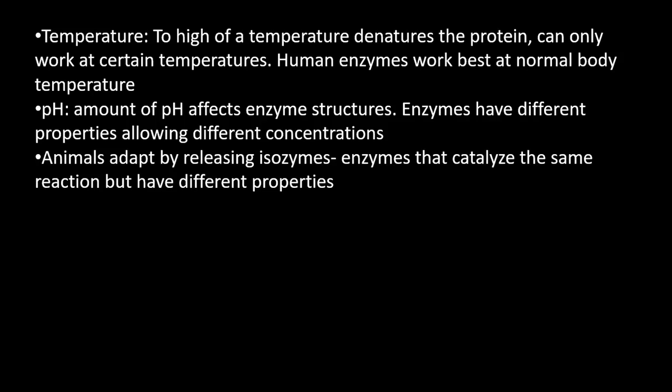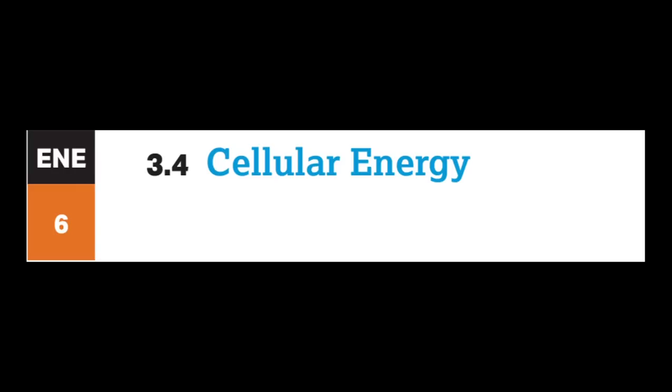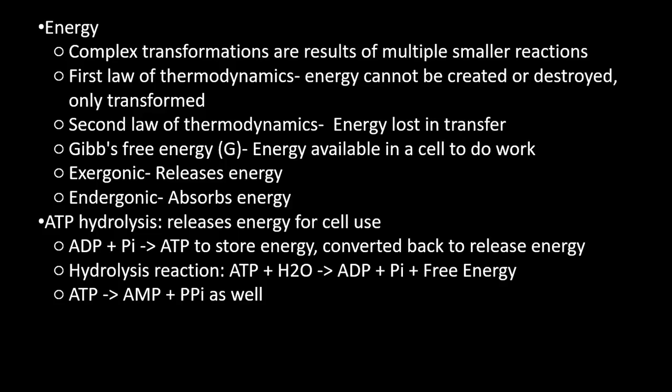Enzymes have different properties allowing them to work in different conditions. Some animals adapt by releasing isozymes — enzymes that do the same thing but have different properties, allowing them to function at different temperatures or pH levels when perfect conditions aren't met.